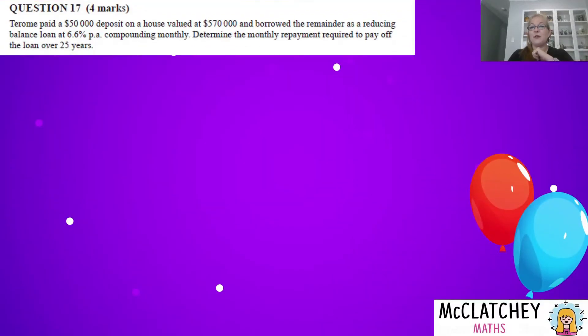Well let's get straight into our first question, question 17 worth four marks. Tarome paid a $50,000 deposit on a house valued at $570,000 and borrowed the remainder as a reducing balance loan at 6.6% per annum compounding monthly. Determine the monthly repayment required to pay off the loan over 25 years. Now I don't know about you, but whenever I see questions like this it is a little bit overwhelming. It's a good idea to get that pen out and underline the keywords. These keywords here - reducing balance loan - will help us to select the right formula.